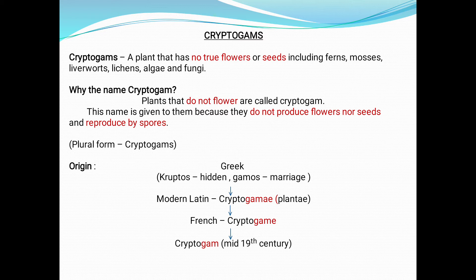The name cryptogams comes from the Greek word. It is the Greek terminology where 'cryptos' refers to hidden, and 'gamos' refers to marriage — that is, hidden marriage — because the reproduction was not apparent. Apparent means it is not visible. The reproduction takes place only through spore formation. Hence, the name cryptogams: cryptos meaning hidden, gamos referring to marriage.